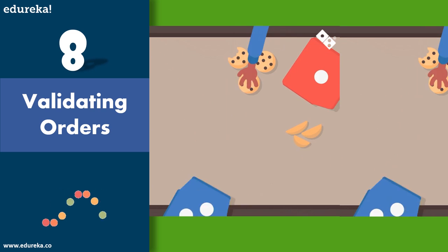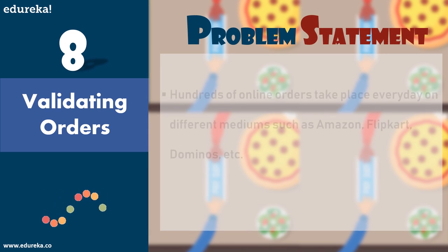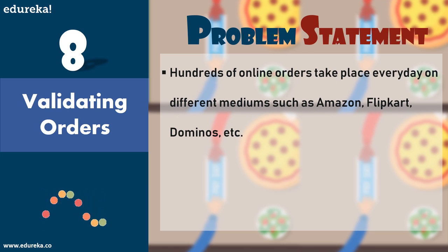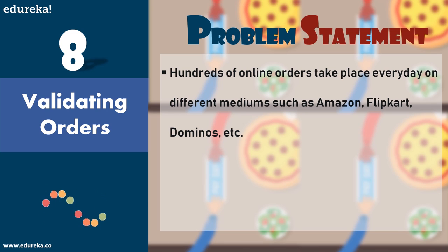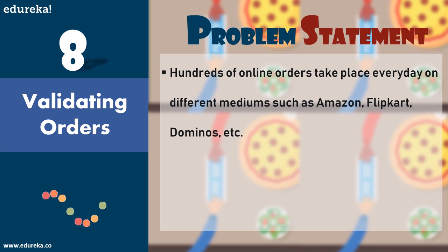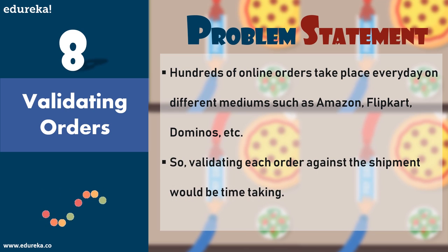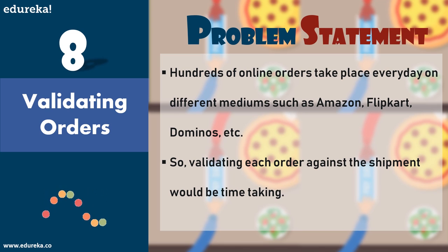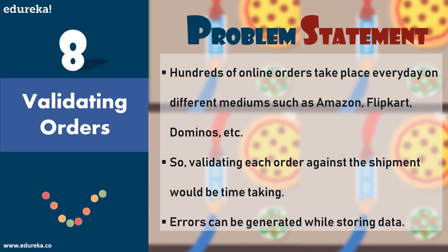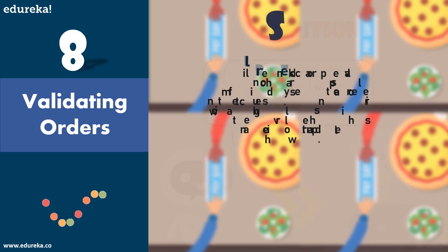The next use case is validating orders. Hundreds of online orders take place every day on different mediums such as Amazon, Flipkart, Dominos, and so on. Each order needs to be validated against the shipment. Companies may use manual workforce to check this, but it is obviously time-consuming and error-prone — for example, an order may be marked as delivered but not received by the customer.